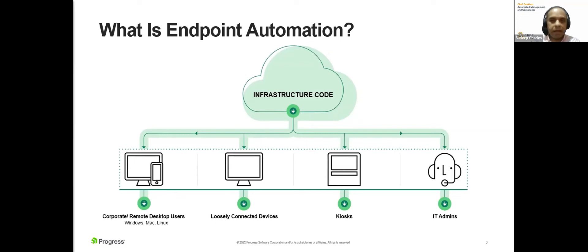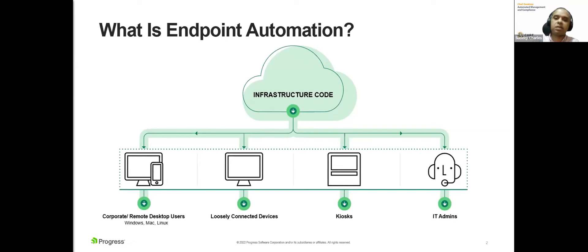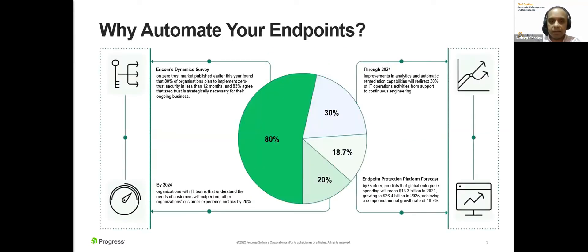Endpoint automation tools also provide a level of visibility and control. This helps IT teams identify what the problem is — easier said than done — and then remediate it. By doing this effectively and remotely, the team becomes more productive and ends up saving a lot more time than they would trying to do this manually, getting the machine in, looking at it, and then trying to fix the problem.